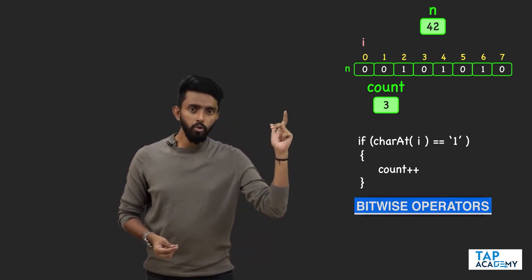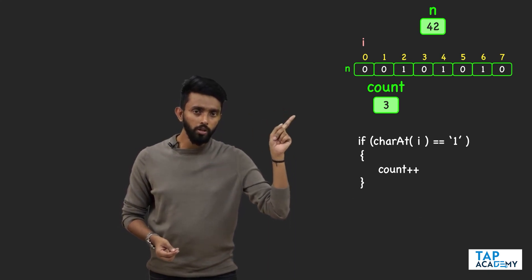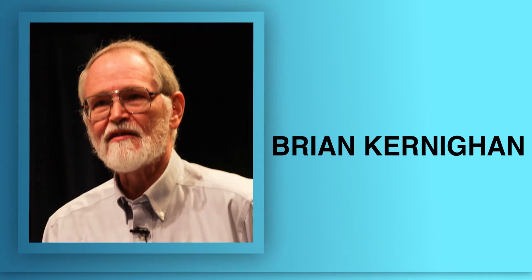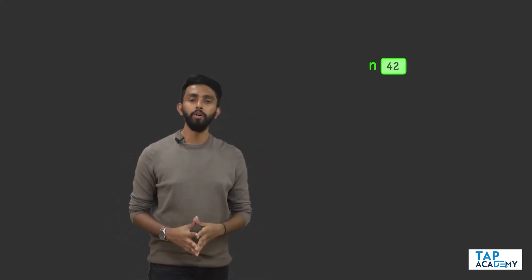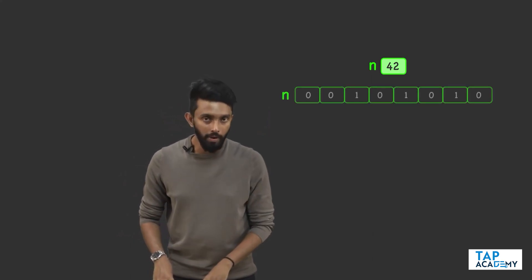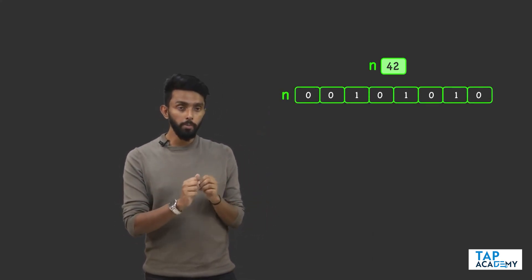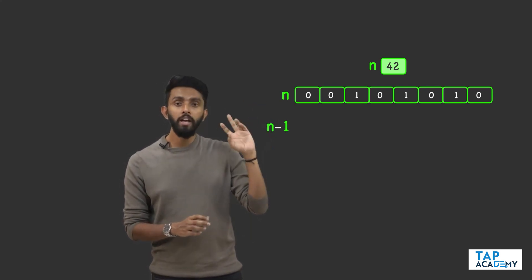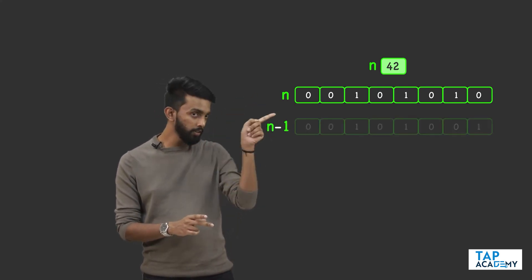How can we use bitwise operators to count the total number of set bits in a given number? The optimized solution makes use of concepts you previously learnt. Observe carefully. Let us assume n is 42. This is n in binary. Now, if you take n and compute n minus 1 — in this case it will be 41 — this is 41 in binary.